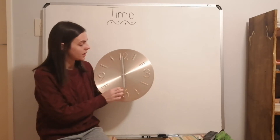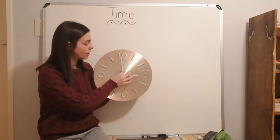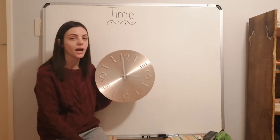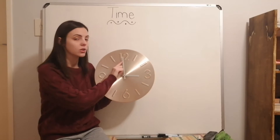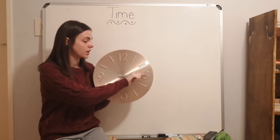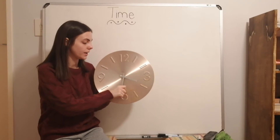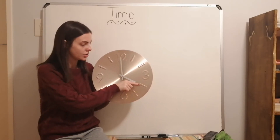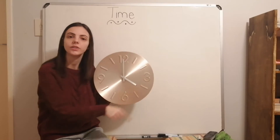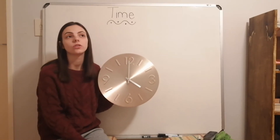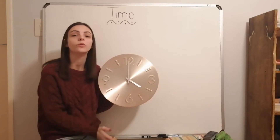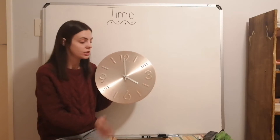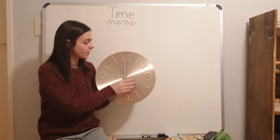Let's put it on three o'clock. One hour has passed — the long hand went right around to the twelve again, and the short one just moved to the next number. So it's four o'clock. If the movie started at three o'clock and it was one hour, it finished at four o'clock.